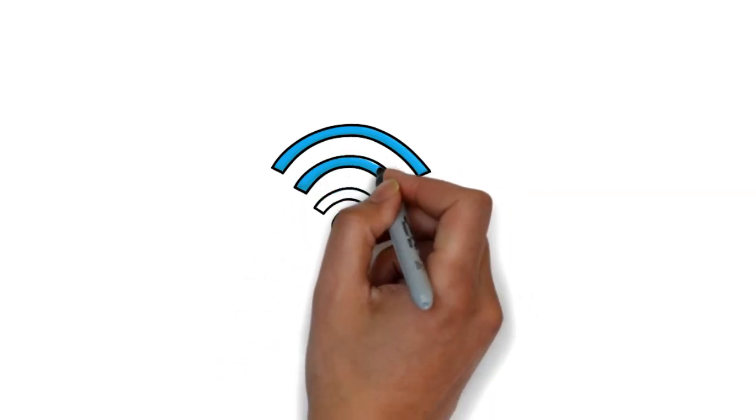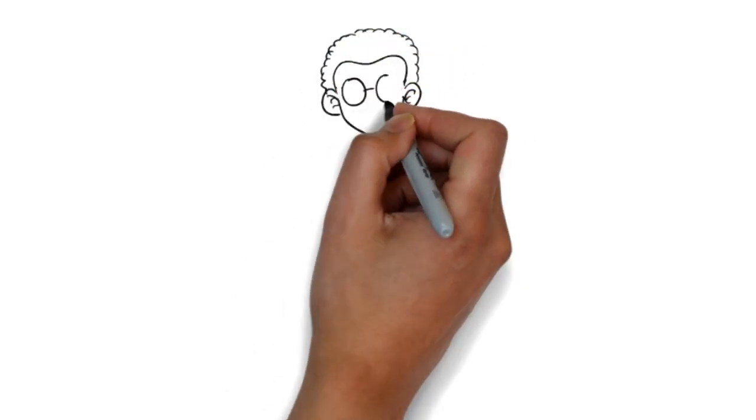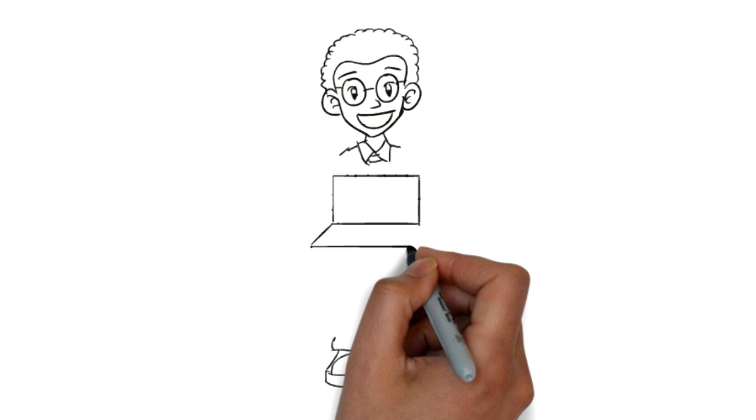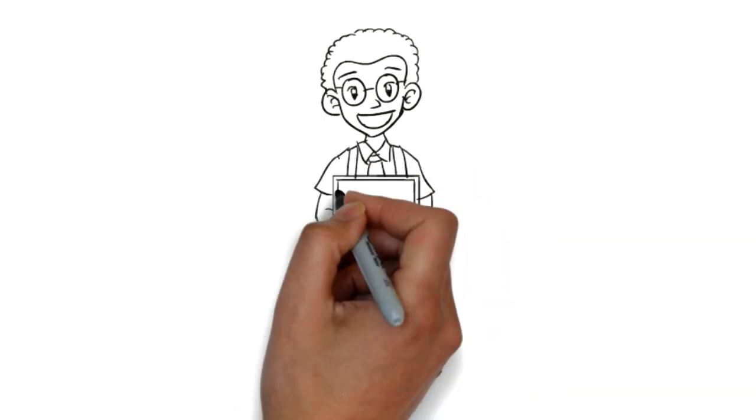Some Wi-Fi hotspots are public, which means anyone can access them without entering a password. Others are private, which means you need to obtain a network password before you can use these hotspots and connect to the internet.